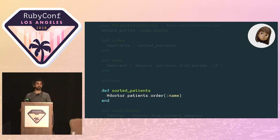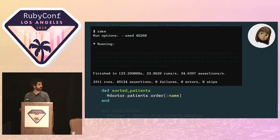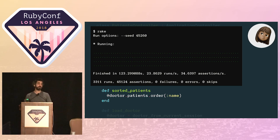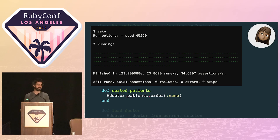She makes a quick change to try sorting the patients in the database instead and runs the tests to see if it breaks anything. But they come back green, which suggests the in-memory sort is probably unnecessary, at least assuming the test coverage is good. Seema's eager to remove the in-memory sort as part of her work, but before she does so, she wants to understand why somebody might have done it in the first place, so she can be sure there aren't going to be any unintended consequences.